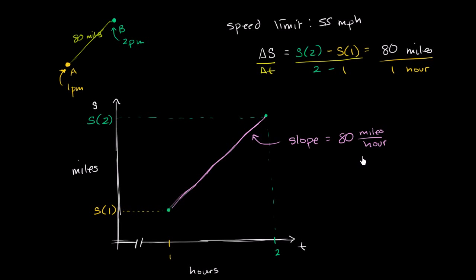So at some point in that hour, and they could have cited, they could have said, by the mean value theorem, at some point in that hour, you must have been going at exactly 80 miles, at least, frankly, 80 miles per hour.